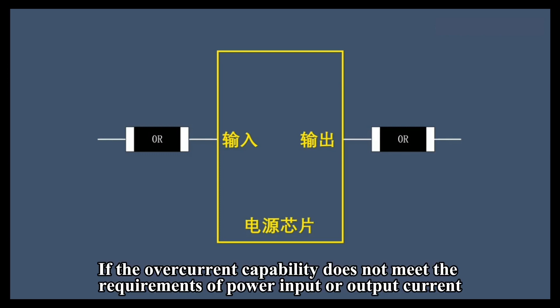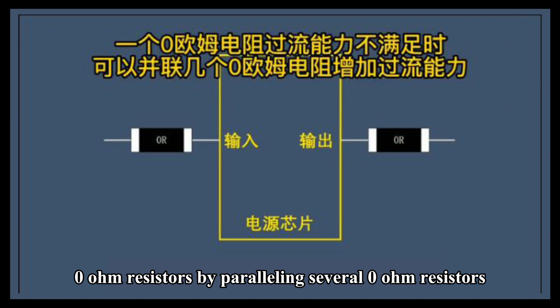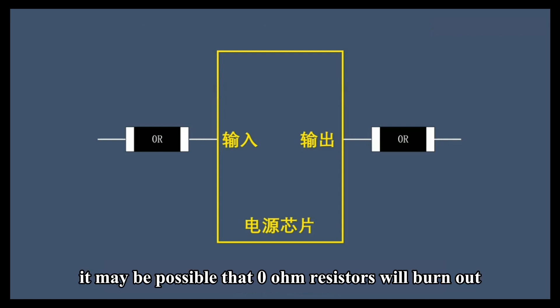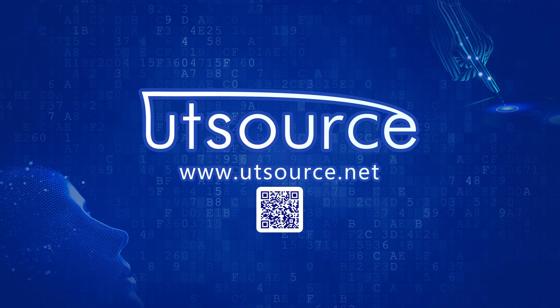If the overcurrent capability does not meet the requirements of the power input or output current, it is necessary to consider increasing the overcurrent capability by paralleling several zero-ohm resistors. This must be remembered, otherwise in actual circuit design, zero-ohm resistors may burn out.